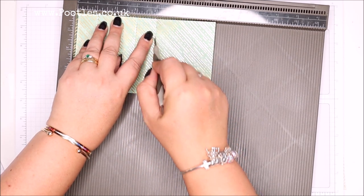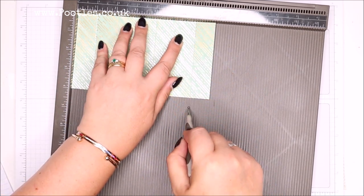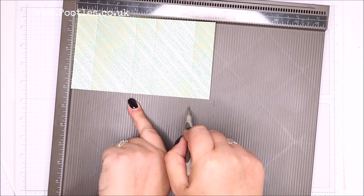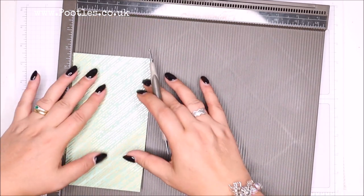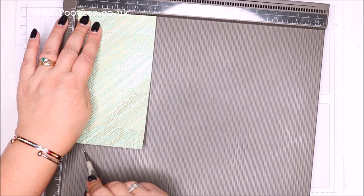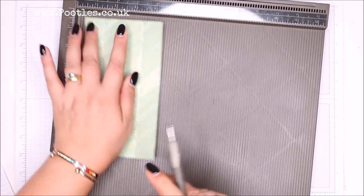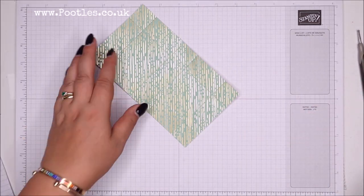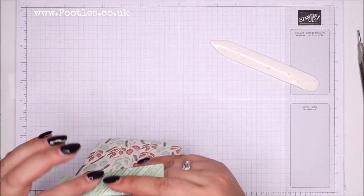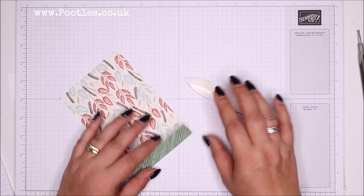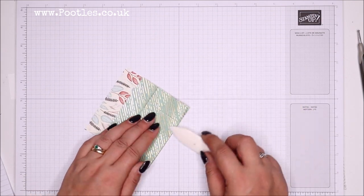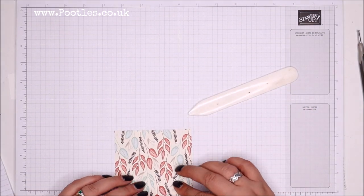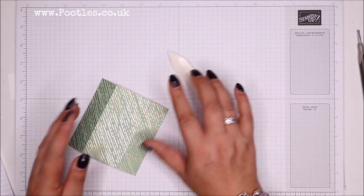Which in metric is two and a half, seven and a half, ten and fifteen. And then on the short side score it at one and three. These are darling little boxes, they really are sweet.